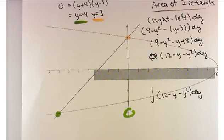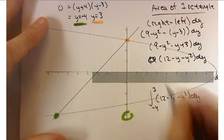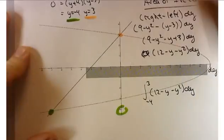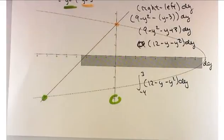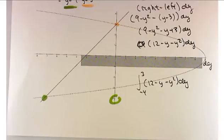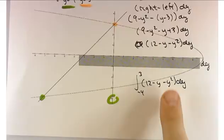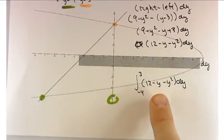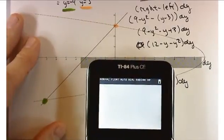The setup is the key part. So integrate from negative 4 to 3 of 12 minus y minus y squared dy. I want to emphasize the setup — that's your biggest battle with these problems. Sometimes I'll just say to set it up and finish it with fnInt. Looking at your last exam, you're pretty good at integrating polynomials. Let's finish with fnInt so you don't lose credit to arithmetic errors.